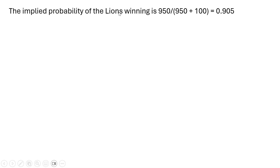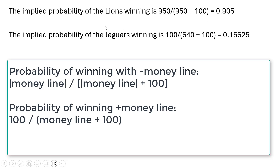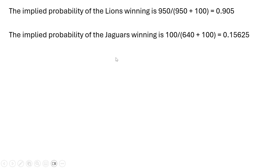The implied probability of the Lions winning is given as follows. The money line for the Lions was minus 950, so ignoring the minus sign, we take 950 and divide it by 950 plus 100. We get the implied probability of the Lions winning of a little over 90%. The implied probability of the Jaguars winning is 100 divided by the positive money line on the Jaguars plus 100, which equals over 15% probability that the Jaguars will win.